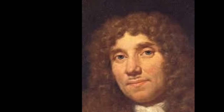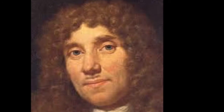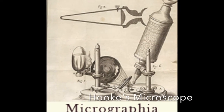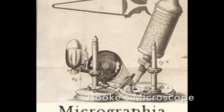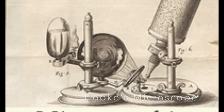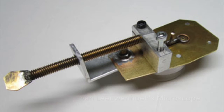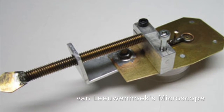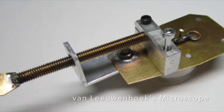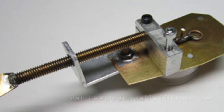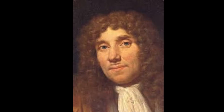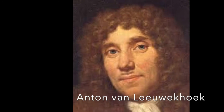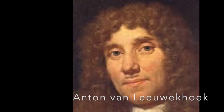Around the same time, a lens maker from the Netherlands visited England and likely read Micrographia. In the book, Hooke had sketched his microscope. The Dutch man noticed the lens in Hooke's model was similar to the glass he was working with, and refined the tool. This man eventually became known as the father of microbiology, Anton van Leeuwenhoek.